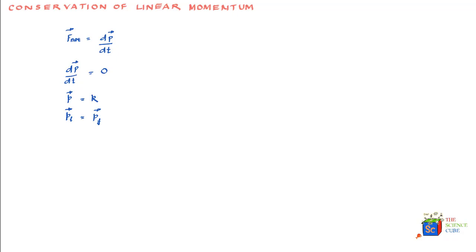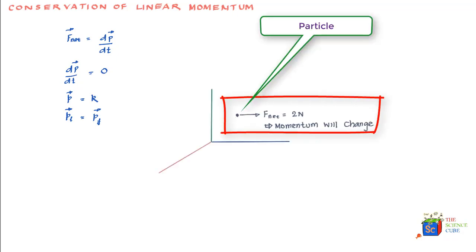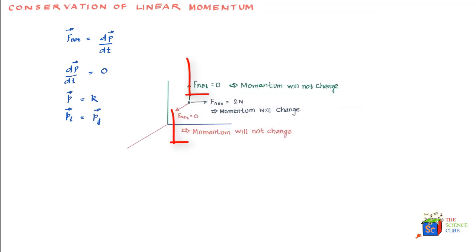You need to observe if there is any net force in any of the directions x, y, or z. If there is a net force, the linear momentum will not be conserved. If there's no net force in any of the directions, linear momentum will get conserved.